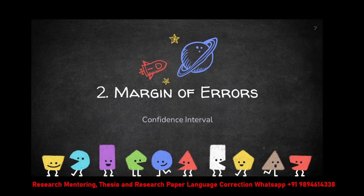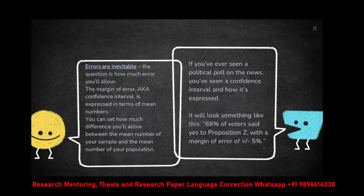Next, you need to know the margin of errors, otherwise called the confidence interval. Margin of errors and confidence interval are the same. Without error, 100% flawless research nobody can do. So obviously in any research there will be certain errors. But what is the accepted level of errors? Errors are inevitable, but you cannot have too much error or your research will become invalid. In general, the accepted level of error is plus or minus 5%.